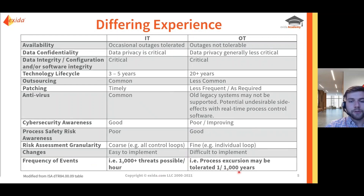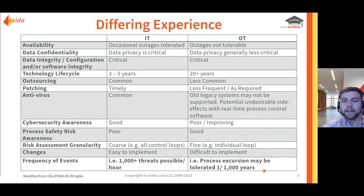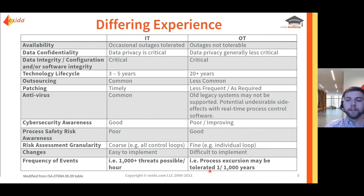The last interesting area is terminology. The IT and OT groups may have a pretty significant separation in their standard terminology. For example, it wouldn't be uncommon for an IT resource to talk about thousands of possible threats per hour, given the very high frequency of untargeted and unskilled attacks on internet-connected systems. Alternatively, an OT group might discuss a process excursion and say a high temperature scenario going above a control set point is only tolerated once in a thousand years. That's six orders of magnitude difference, so we really want to work on breaking down these differences in experience and understanding any terminology and other core differences that need to be overcome.